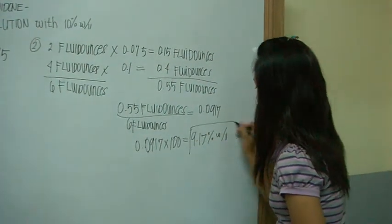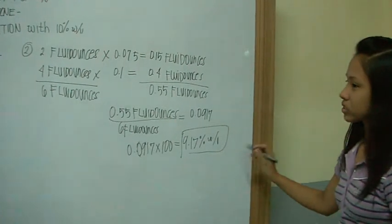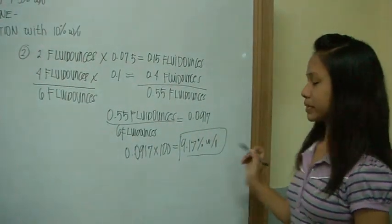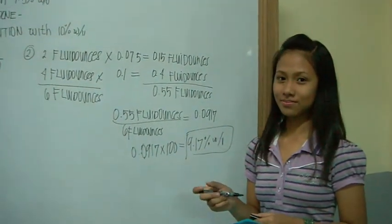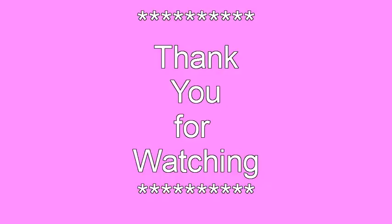9.17% w/v. This is the resulting strength of the Povidone-Iodine mixture.